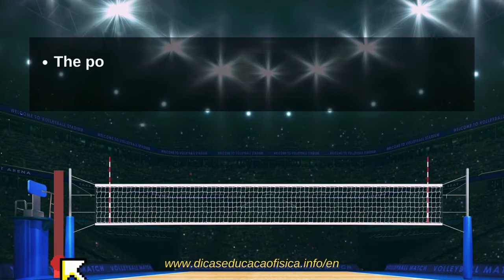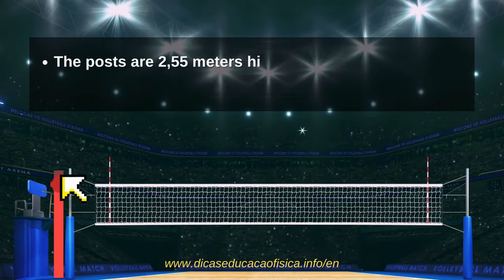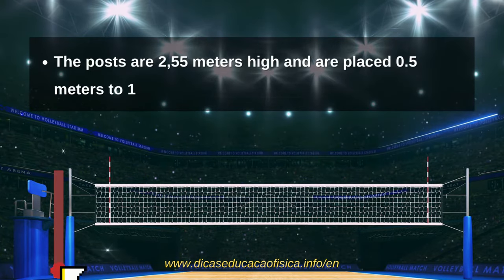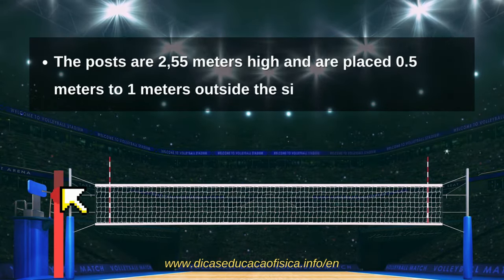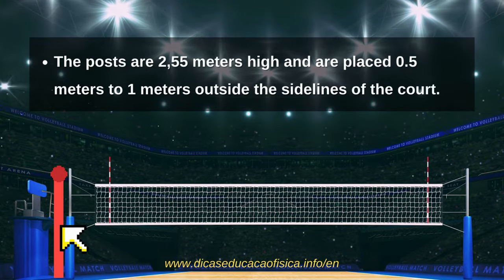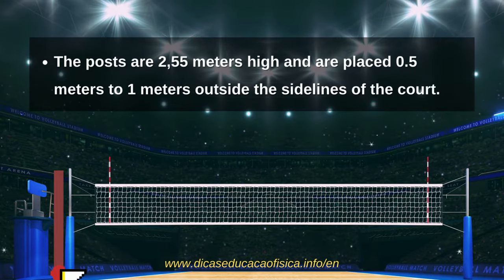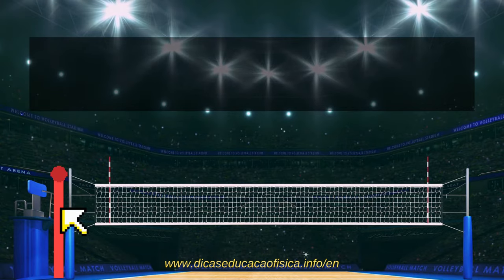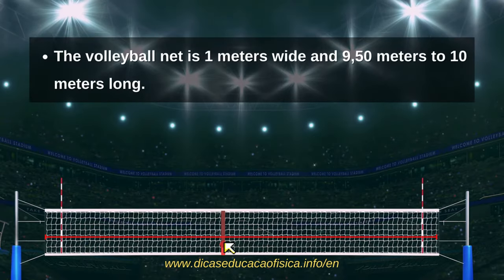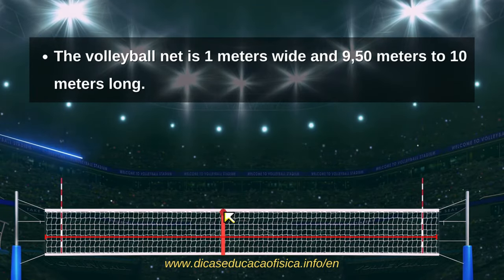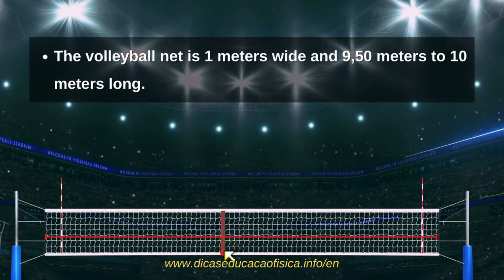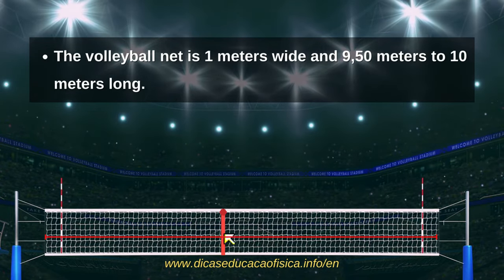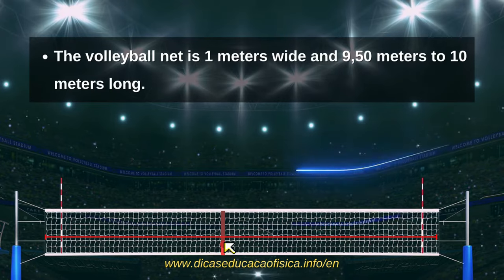The posts are 2.55 meters (8.35 feet) high and are placed 0.5 meters (1.7 feet) to 1 meter (3.3 feet) outside the sidelines of the court. The volleyball net is 1 meter (3.3 feet) wide and 9.50 meters (31.2 feet) to 10 meters (32.8 feet) long.